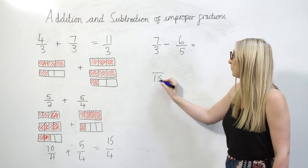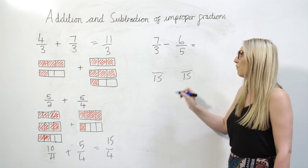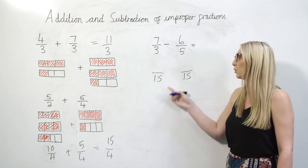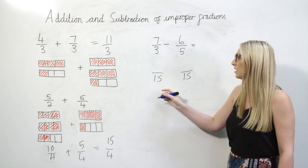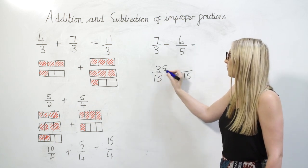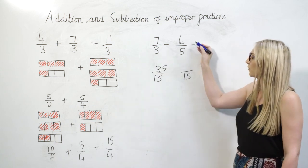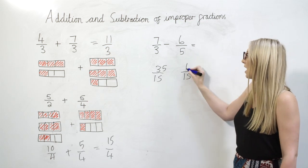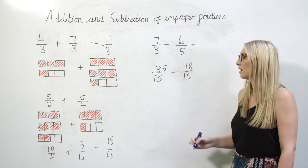So I want each of my fractions to have a denominator of 15 and to do that I'm going to find an equivalent fraction. An equivalent fraction to seven-thirds would be 35-fifteenths and an equivalent fraction to six-fifths would be 18-fifteenths.